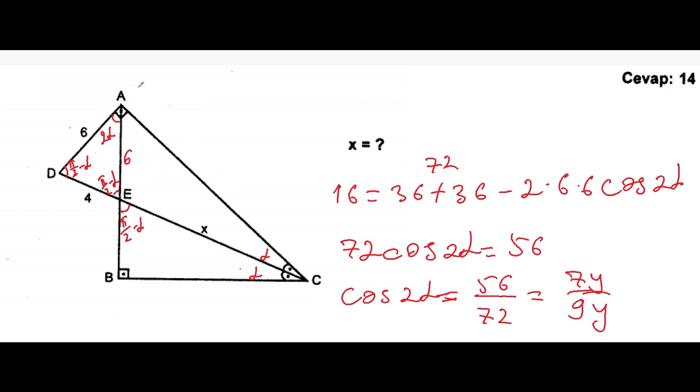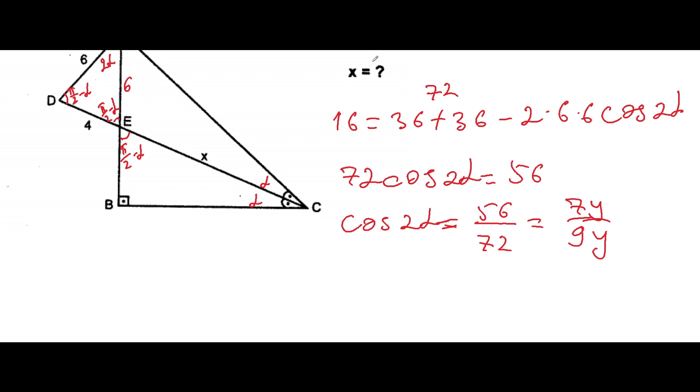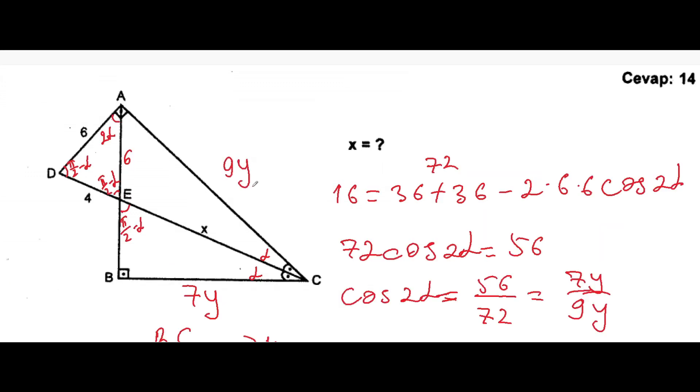In triangle ABC, we can see that this angle is 2α. And here we can see the cosine 2α. Cosine of this angle 2α is equal to here from the Pythagorean concept. From the concept of a right angle triangle. We can say that this will be BC over AC. And here we know that this is also equal to 7y over 9y. So we can write down this BC side as 7y and AC side as 9y.